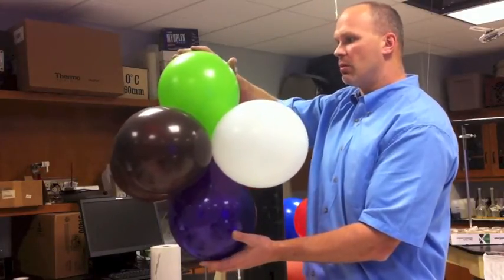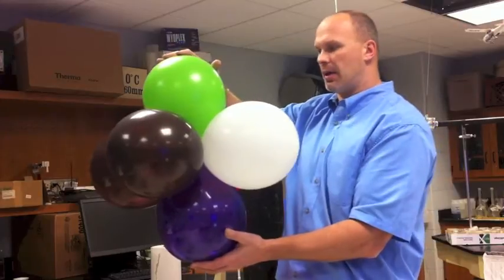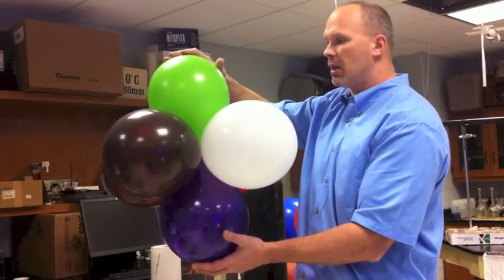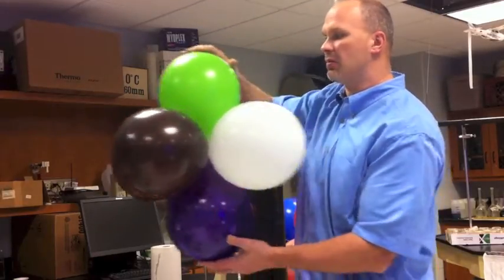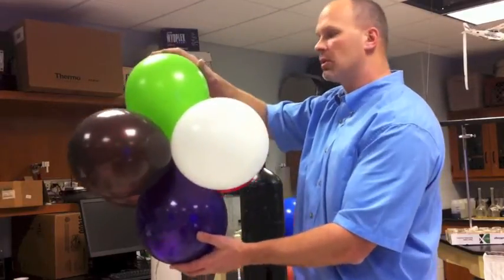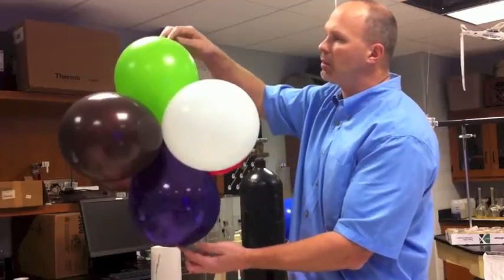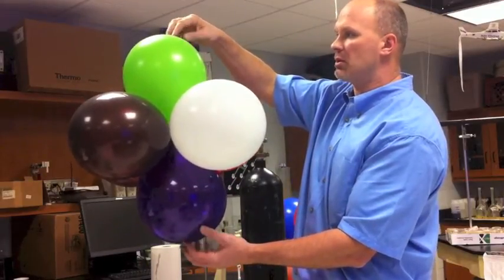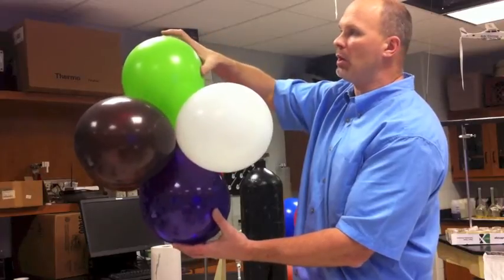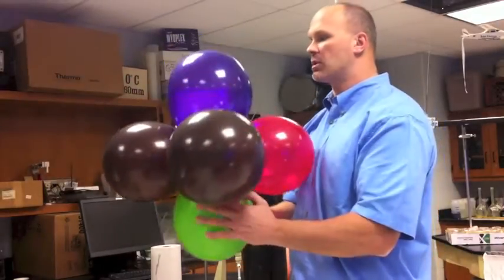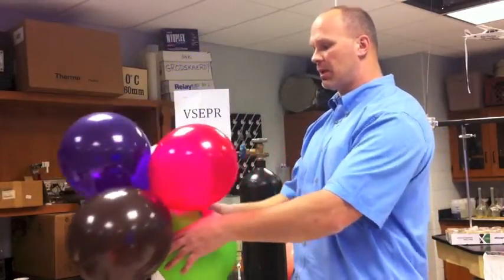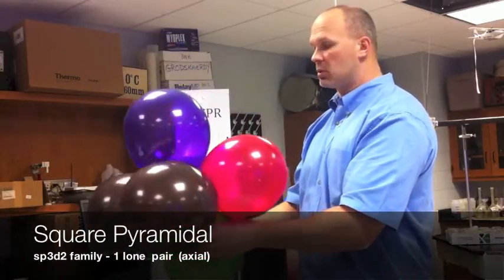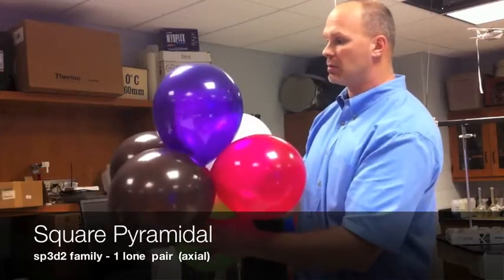You have, if you, the other SP3D, the trigonal bipyramidal family, the lone pairs are in the equatorial positions. In this family, the SP3D2 octahedral family, the lone pairs are always going to be in the axial positions for stability purposes. So one lone pair is the top of a four-sided pyramid. So if the green was a lone pair, considering the shape now, it would be called a square pyramidal, square pyramid, for an obvious reason.